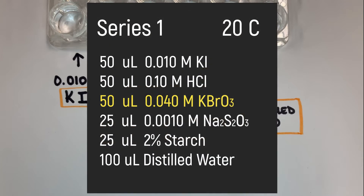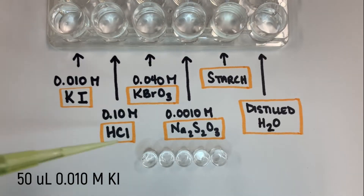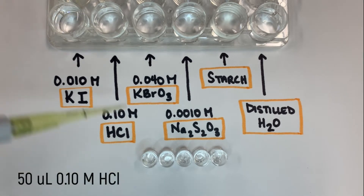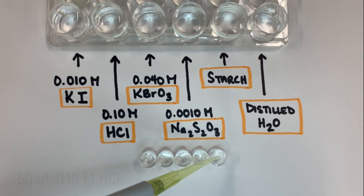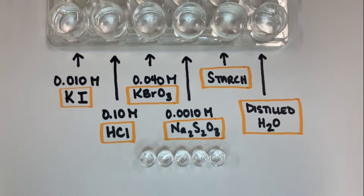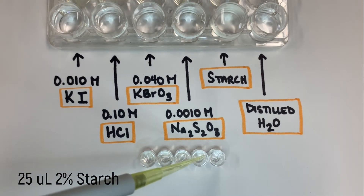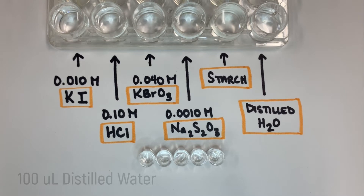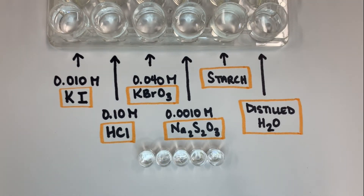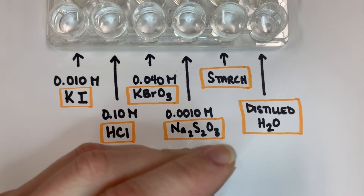Here's our ingredient list for series one, which takes place at 20 degrees Celsius. You can see the potassium bromate is highlighted, which indicates that we will add that last. So let's begin. I'm going to use a micropipetter to add 50 microliters of 0.010 molar potassium iodide. Then with a clean tip, I'm going to add 50 microliters of a 0.10 molar hydrochloric acid solution to each of my five trials. Now I'm going to add 25 microliters of the 0.0010 molar sodium thiosulfate solution, 25 microliters of starch, and 100 microliters of distilled water. This just ensures that we end up with 300 microliters of total solution. The next step is to stir each micro well gently to combine all of the ingredients. And the last step is to add the potassium bromate.